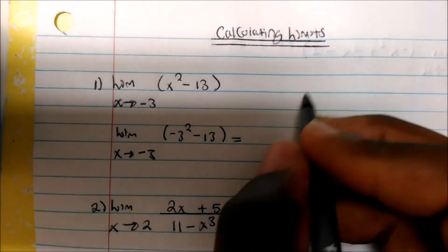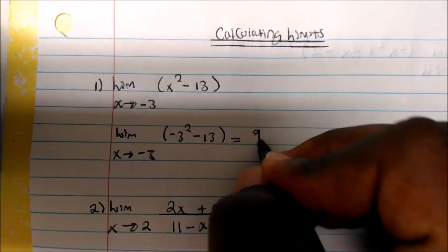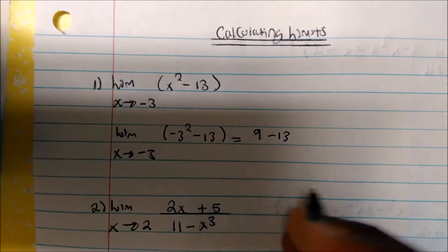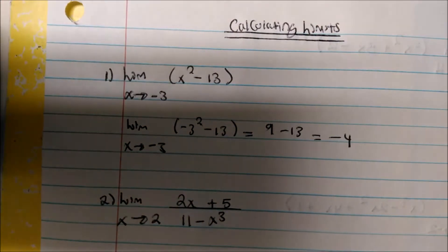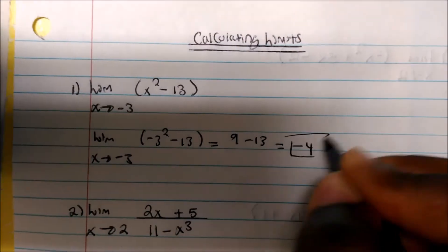Negative 3 squared is going to give a positive value. So this is basically 9 minus 13, which will be negative 4. So this is what your limit is going to be equal to.